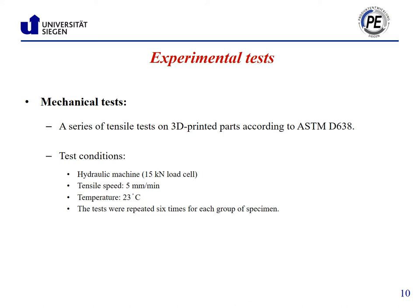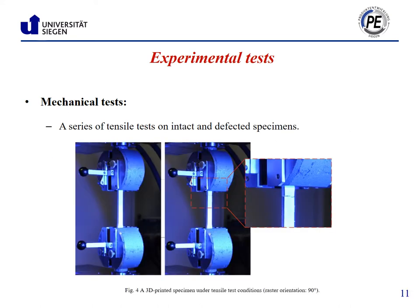The hydraulic operated ram with computerized recording facility provides load deflection curves of each sample until it breaks. A series of tensile tests on the intact and defected specimens were performed under laboratory conditions. Repeating the test on each group of specimens and obtaining similar results confirmed repeatability of the test. You can see a specimen under test conditions: the left figure shows a specimen prior to loading and the right figure shows a fractured specimen after applied load.